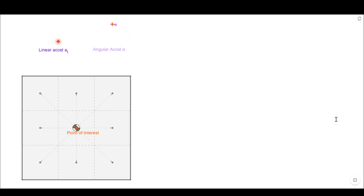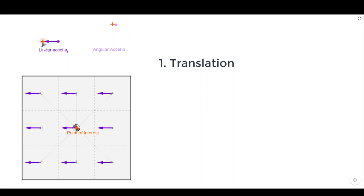The first case is pure translation. In pure translation, every single point on the entire body has the exact same velocity and the same acceleration. Adding a linear acceleration to this body, you can see that each of the nine subshapes the square is divided into all accelerate to the left at the exact same value — this is the definition of translation. You can use the same equations as particles for this scenario.